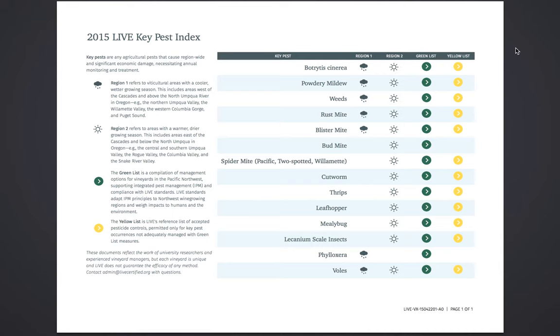This is a quick introduction to Live's green and yellow lists. These are important reference lists for vineyards in the Live program.